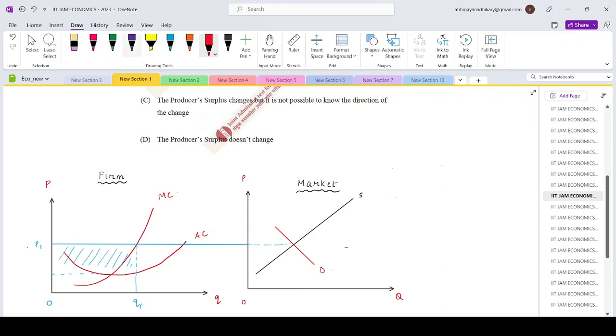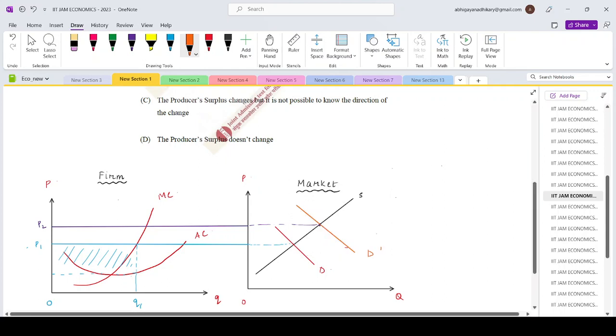The profit will only increase by an amount k only when the firm is able to charge a higher price. So let's say the price charged is P2. In that place, that is only possible when the market demand has increased to an amount D dash.